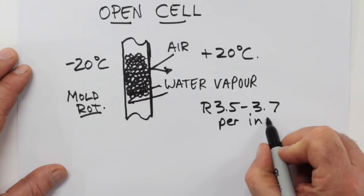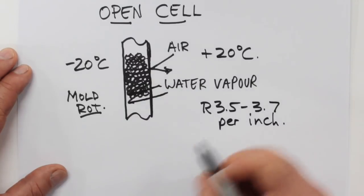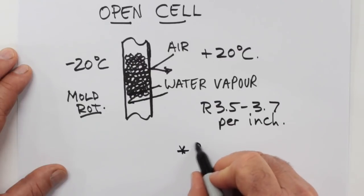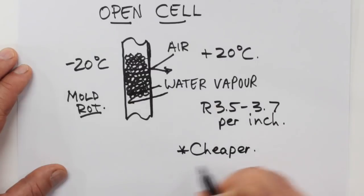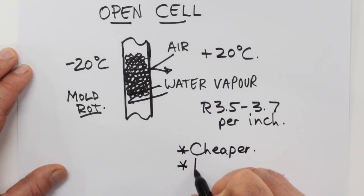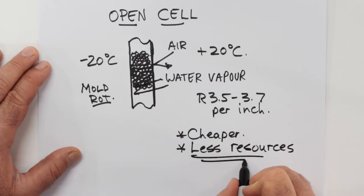It'll give you about R3.5 for open compared with R6 per inch for closed cell. But on the plus side, open cell is cheaper and it uses significantly fewer resources in its manufacturing than closed cell.